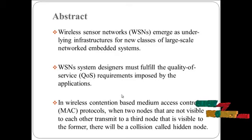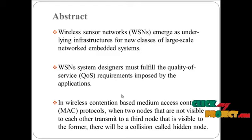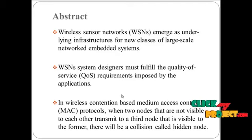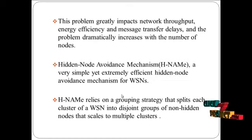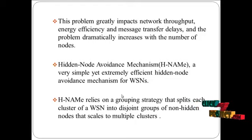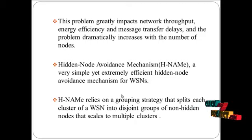With hidden node collision, when transferring data, it chooses two paths, causing confusion. There will be a header node and traffic will occur. We can alter from any one of the nodes, then the path will be changed. This problem greatly impacts network throughput, energy efficiency, and message time delay. The problem further increases with the number of nodes, and messages will be lost during delays because two nodes interact with each other.